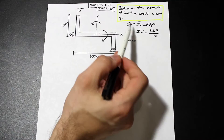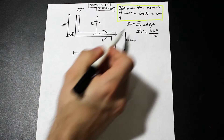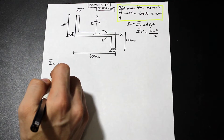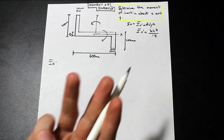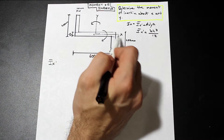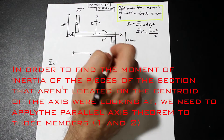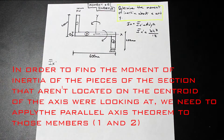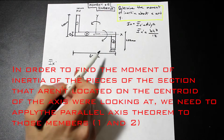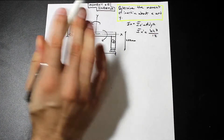Let's start by finding the moment of inertia about x of this composite shape. We're going to break this up into three shapes — shape one, shape two, and shape three. We'll start with shapes one and two, and then do shape three, because for shape three we don't need to use the A·dy² term. For shape one, let's find the moment of inertia just of this shape without considering the neutral axis.